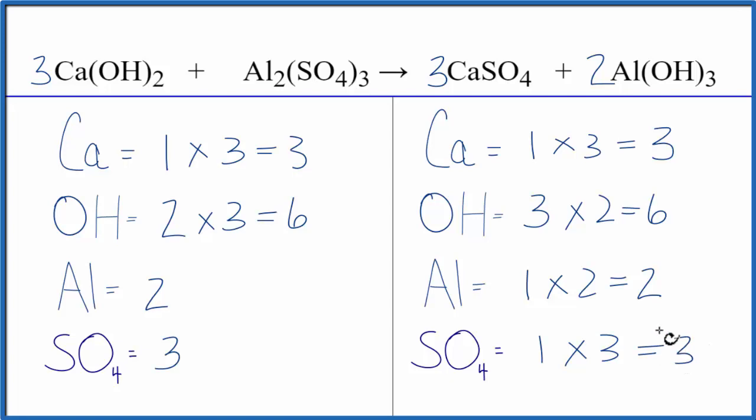So you can see by counting these polyatomic ions as one item if they appear on both sides of the equation, it makes it a lot easier. We don't have to count up all these separate oxygens and hydrogens and sulfurs. And that not only makes it easier to balance, we're less prone to make errors.